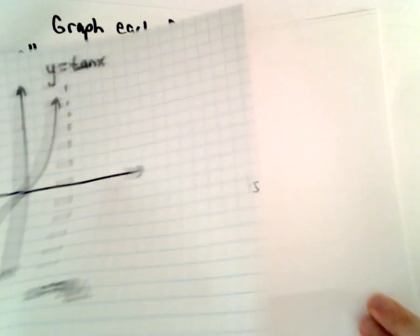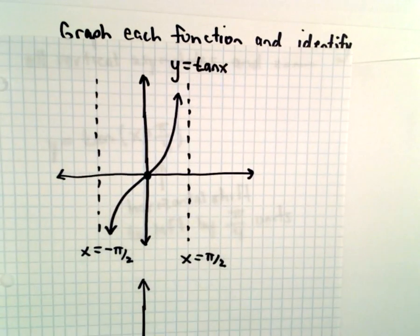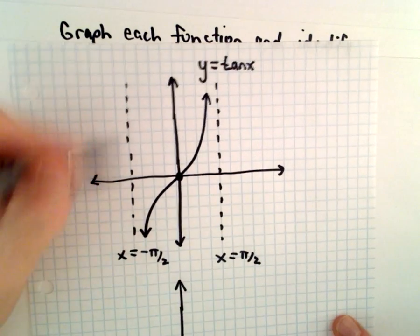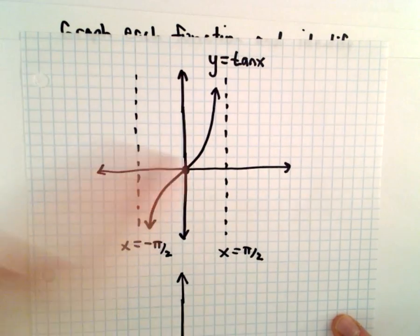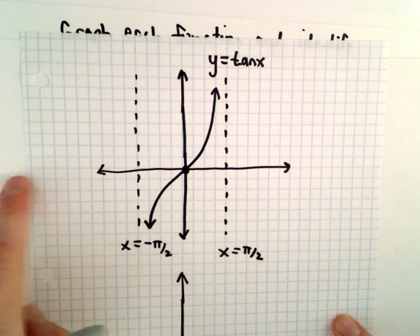So I went ahead and made a quick little sketch here of tangent x. So there that is at the top. So tangent of 0 is 0, at pi over 2 and at negative pi over 2 you have vertical asymptotes, and again the graph keeps repeating.